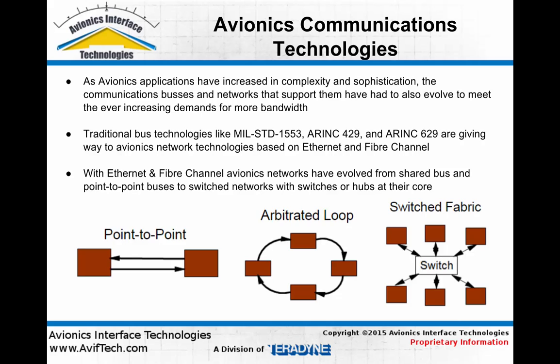With ethernet and fiber channel types of networks used in avionics applications, these systems have evolved from shared buses and serial links, which are common with 1553 and ARINC 429, to switch networks where switches or hubs are at the core of the network and are the mass interconnect connecting all of the end nodes of the system.